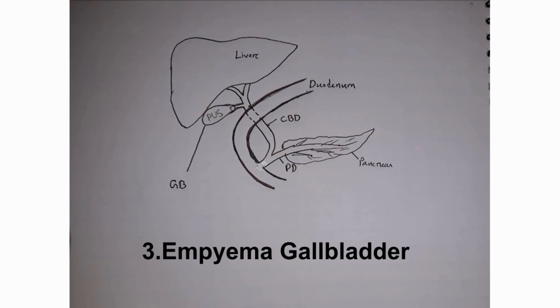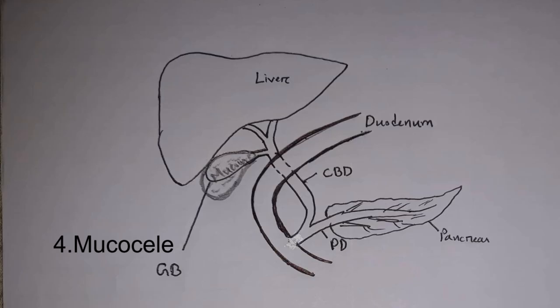Thirdly, this is an empyema of the gallbladder, meaning the gallbladder has an infection. This is a collection of pus within the gallbladder. Fourthly, this is a mucocele — a collection of sterile mucus within the gallbladder.